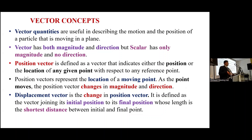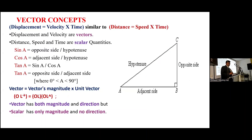Moving to vector concepts: a vector has both magnitude and direction, while a scalar has only magnitude and no direction. A position vector indicates the position or location of any given point with respect to a reference point. Position vectors represent the location of a moving point; as the point moves, the position vector changes in magnitude and direction. A displacement vector is a change in position vector, defined as the vector joining its initial position to its final position, with length being the shortest distance between them.